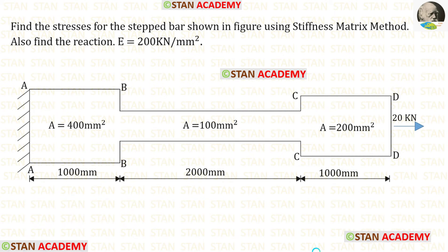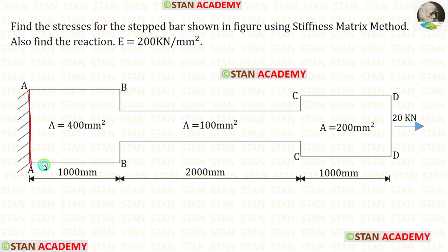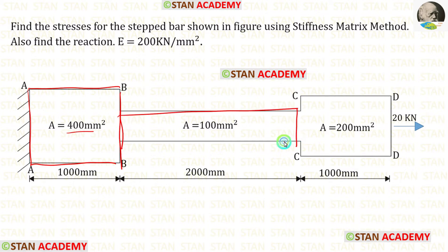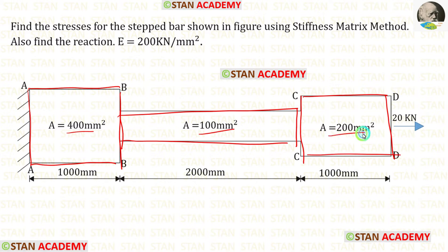Hello everyone. Today we are going to see a problem based on analysis of a bar using the stiffness matrix method. In this analysis we have to find the stresses and also the reactions. The Young's modulus is given as 200 kilo Newton per millimeter square. Bar AB has a cross-sectional area of 400 mm², bar BC has an area of 100 mm², and bar CD has an area of 200 mm².